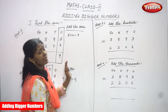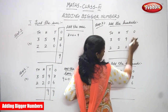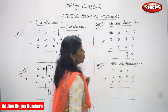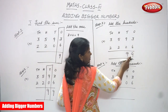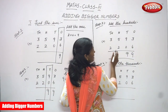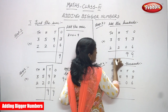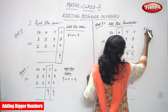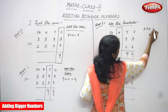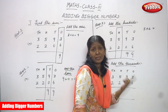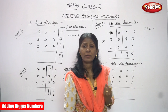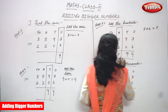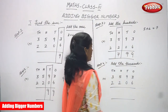Step three: add the hundreds. I've already written the ones place answer and the tens place answer. Now I'm focusing only the hundreds. The numbers in the hundreds place are five and two. Five plus two: five in the mind, two on the finger - after five: six, seven. So write seven here.